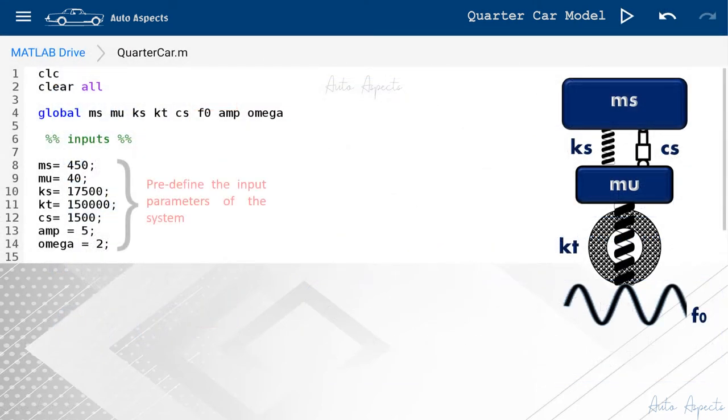First, define the input terms of the model, which includes the sprung and unsprung mass, suspension and tire stiffness, followed by the suspension damping. Apart from that, AMP refers to the amplitude of the input excitation, and omega is the frequency associated with it.